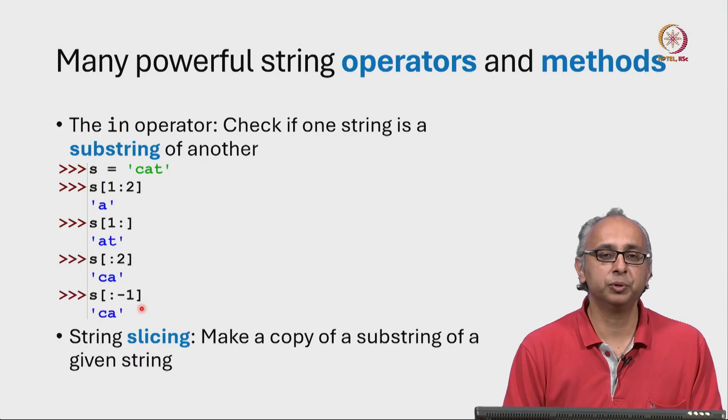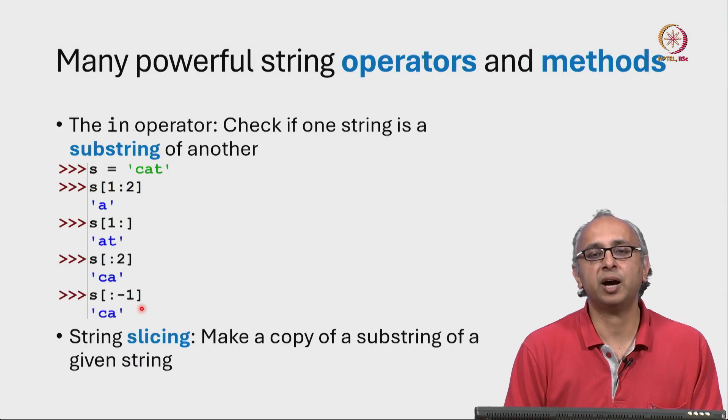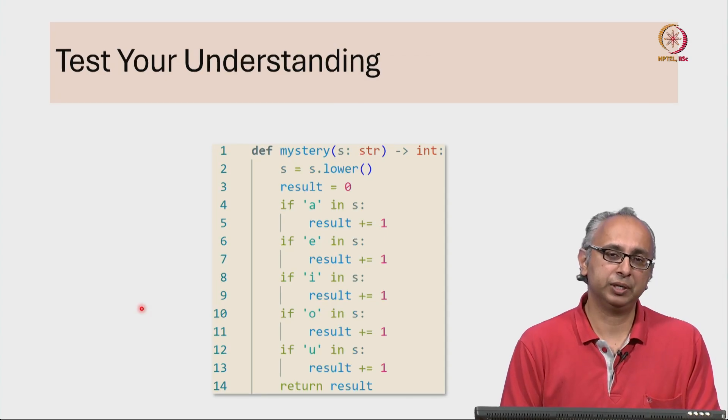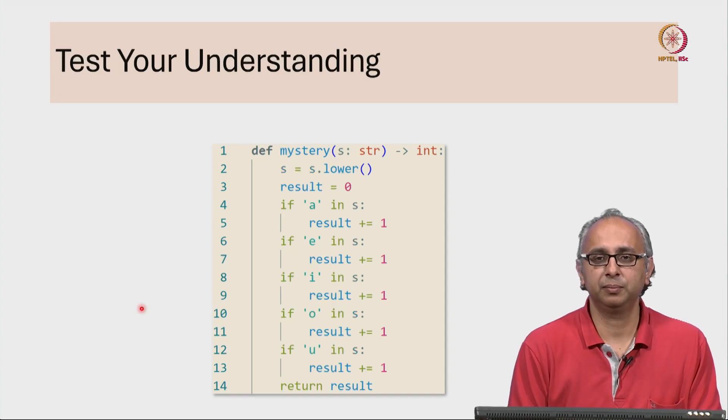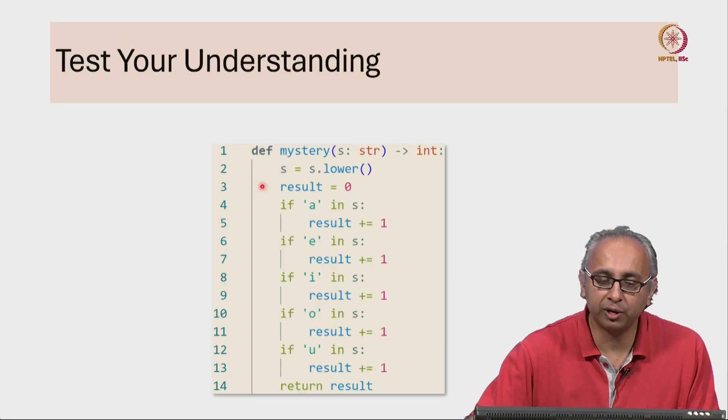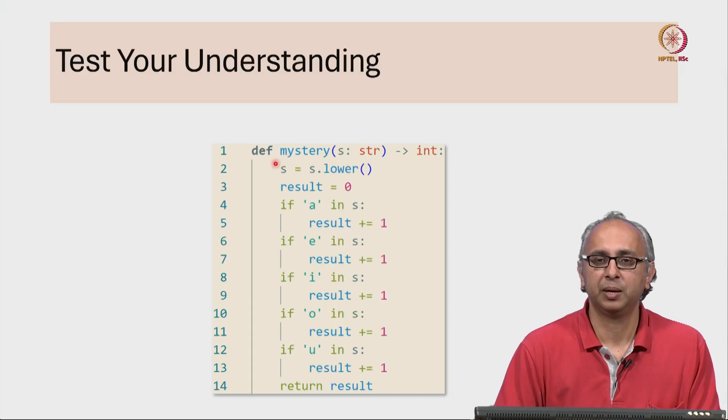Now before we write the code, let's make sure we have understood this with this example. So this is a function that our friend has written but they have not named it properly. In fact, they've called it mystery. So let's try and understand how it works.